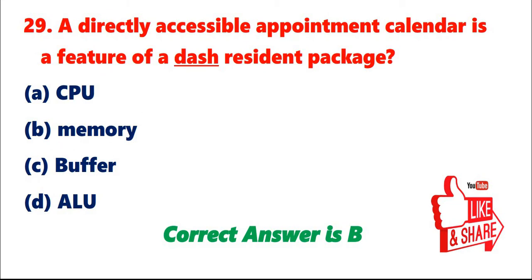Question 29: A directly accessible appointment calendar is a feature of a resident package. A. CPU. B. Memory. C. Buffer. D. ALU. Correct answer is B.